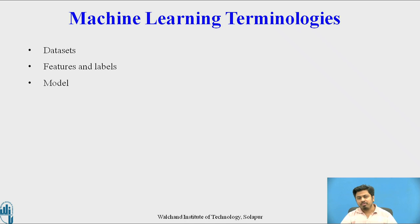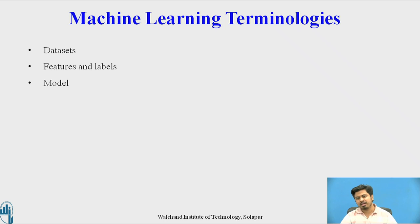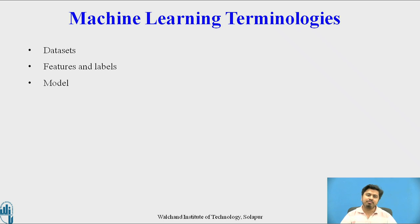We also have the term 'model', commonly called a machine learning model. A model in machine learning is a computational entity — it could be an algorithm, a step-by-step process, or any computational paradigm — that describes the relationship between features and labels. Labels are those columns in your dataset whose value the ML model tries to predict given the feature values. In short, a model describes the relationship between features and labels, and given a set of features, we can predict the possible outcome for a label.